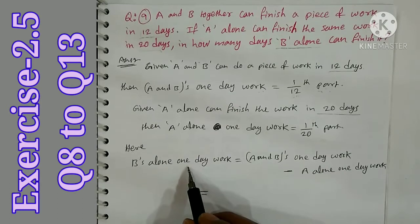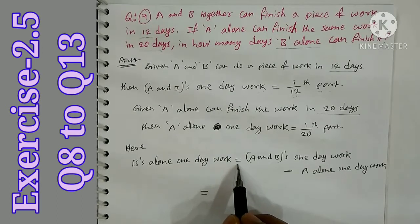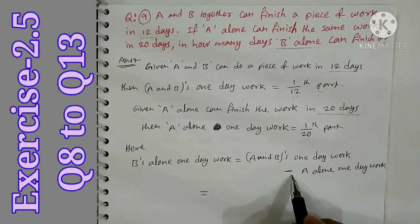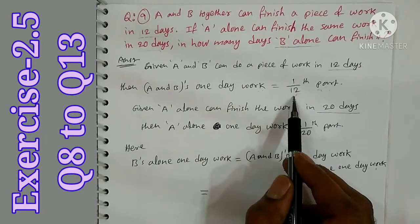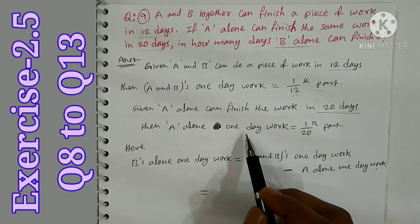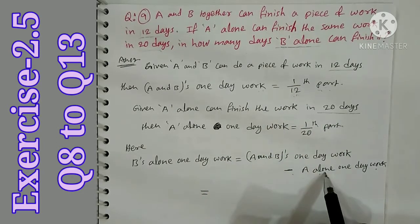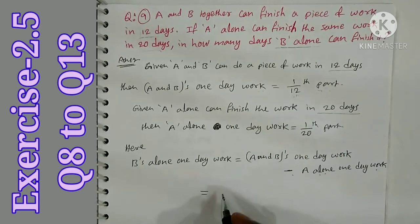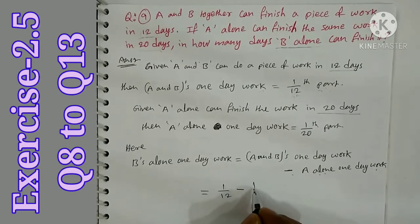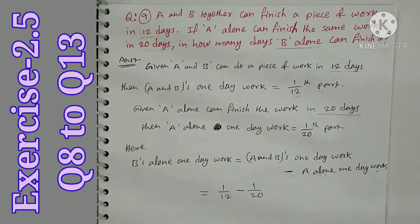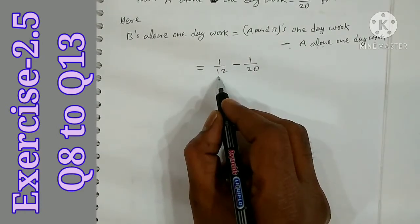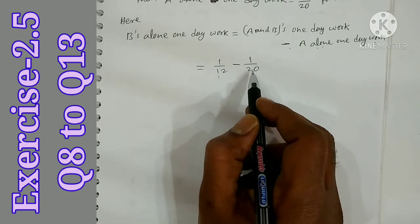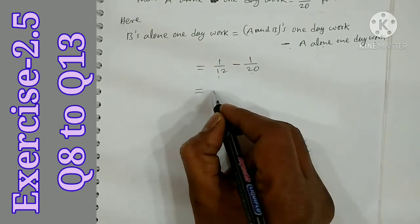B's 1 day work equals 1 by 12 minus 1 by 20. Here, 1 by 12 is A and B's combined 1 day work, and 1 by 20 is A's work alone. We simplify this to get the answer using LCM of 12 and 20.